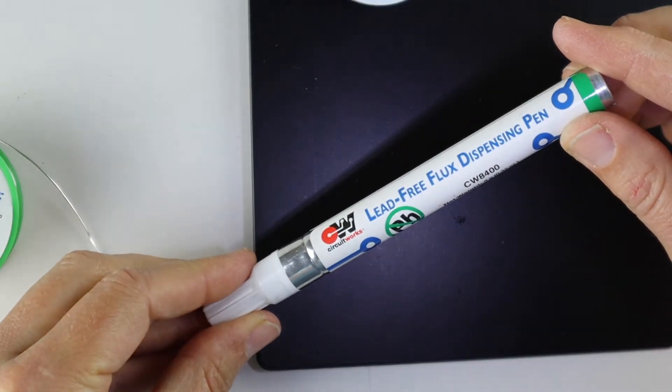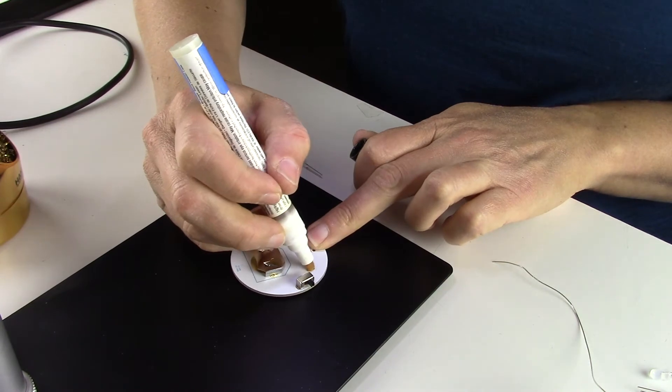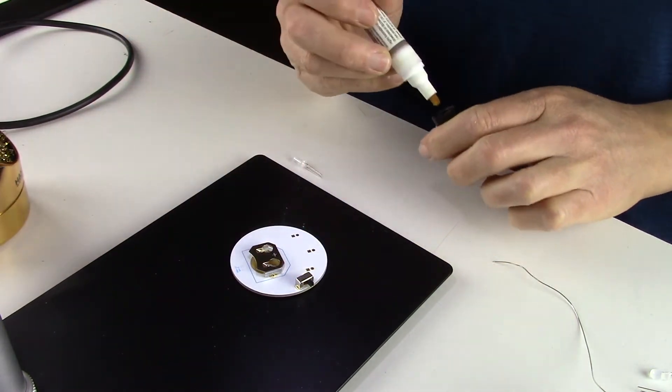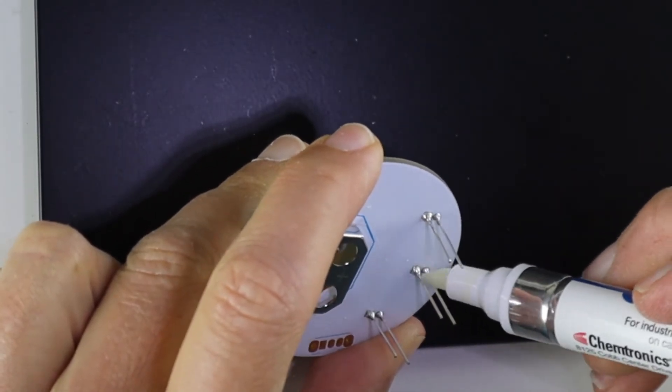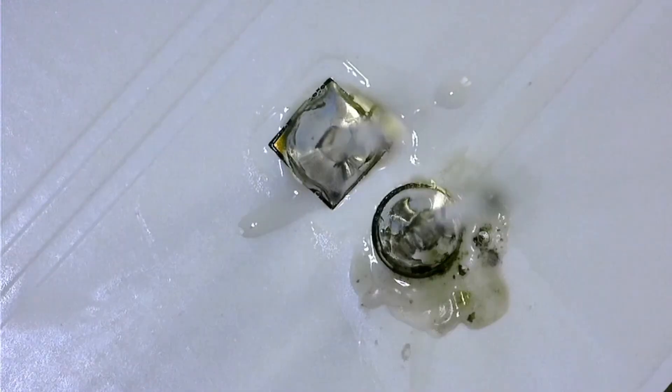A flux pen is a very handy tool for this, and we highly recommend buying one, because you can just paint the joint with flux and reflow it without adding any solder. But if you don't have a flux pen, you can add just a little more solder, because solder contains flux.